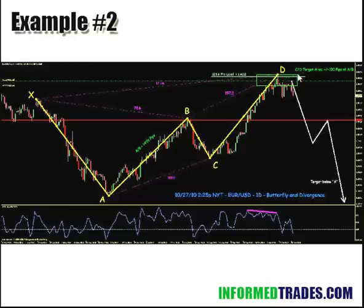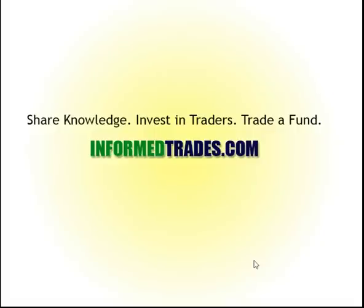On the screen is a chart shared by InformedTrades member DREBG. He observes that at point D, there is also a divergence, which is another cue that it may be time to exit. Then we start to see price show some weakness — what could be called a bearish checkmate — another cue to exit. That's the basic idea. If you have any questions or knowledge to share, join us at informedtrades.com. Thanks and best of luck in your trading.